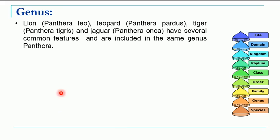For example of genus: lion is Panthera leo, leopard is Panthera pardus, tiger is Panthera tigris, jaguar is Panthera onca. All these are cat family members in which the genus is common — they share some similarities, which is why all these members belong to the same genus Panthera.